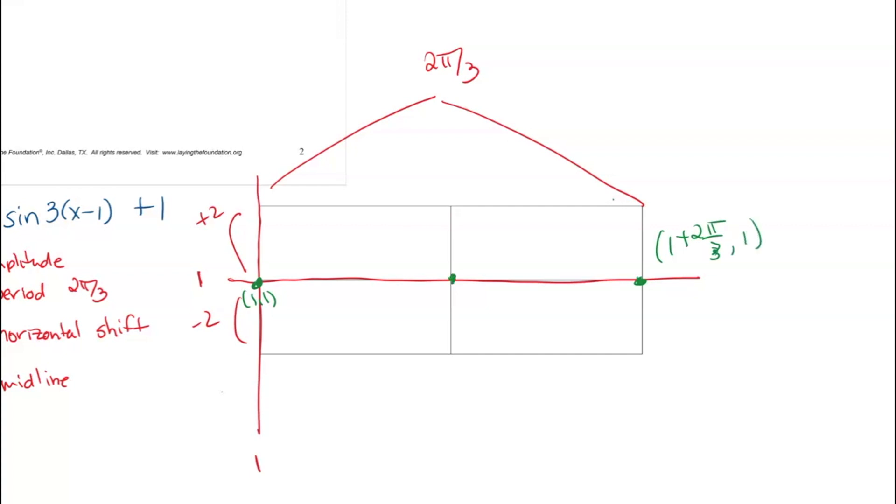This point here is happening at halfway through my period, which happens to be π over 3, but remember it's starting at 1, so this is the ordered pair (1 + π/3, 1). I know that sine is going to start and go up, and then come down, and then end back at the midline. So I want to know what this point and this point is.